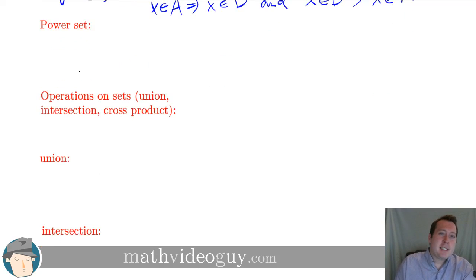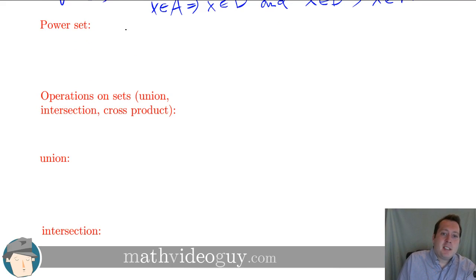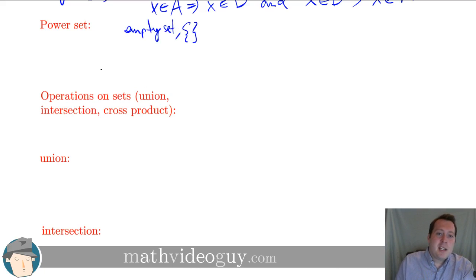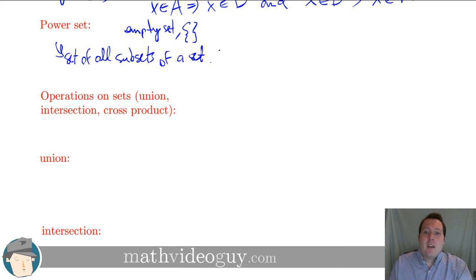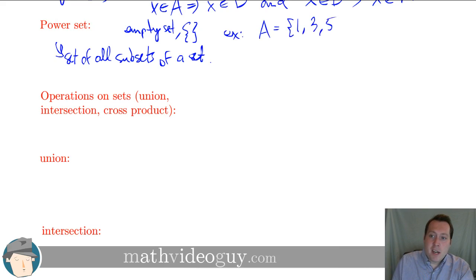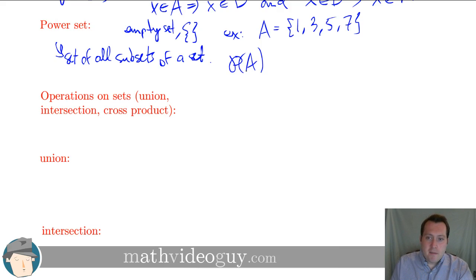Next we have the power set. Two important sets to keep in mind are the empty set — a set with nothing in it — and the power set. The power set is the set of all subsets of a given set. For example, for A = {1, 3, 5, 7}, we consider the power set of A. I'll describe it without the formal notation since I want to make sure I use it correctly.